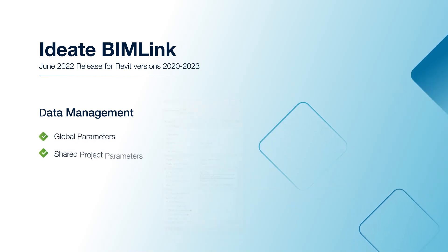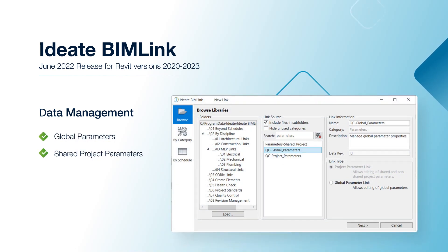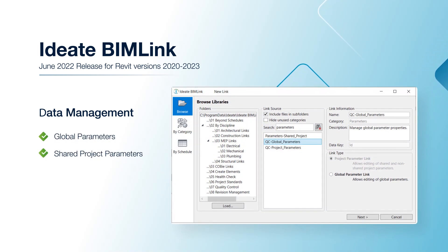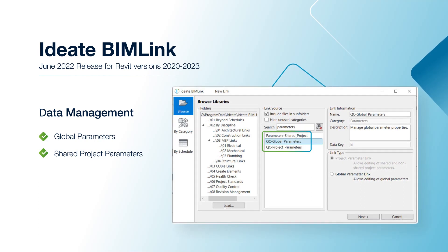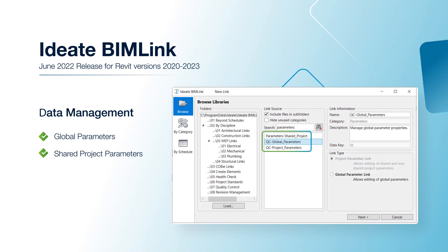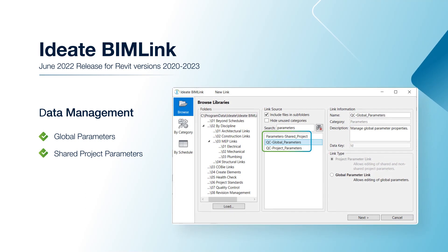Giving you greater access to more of your Revit data, ID8 BIM Link now has the ability to report on shared or non-shared project parameters as well as global parameters.